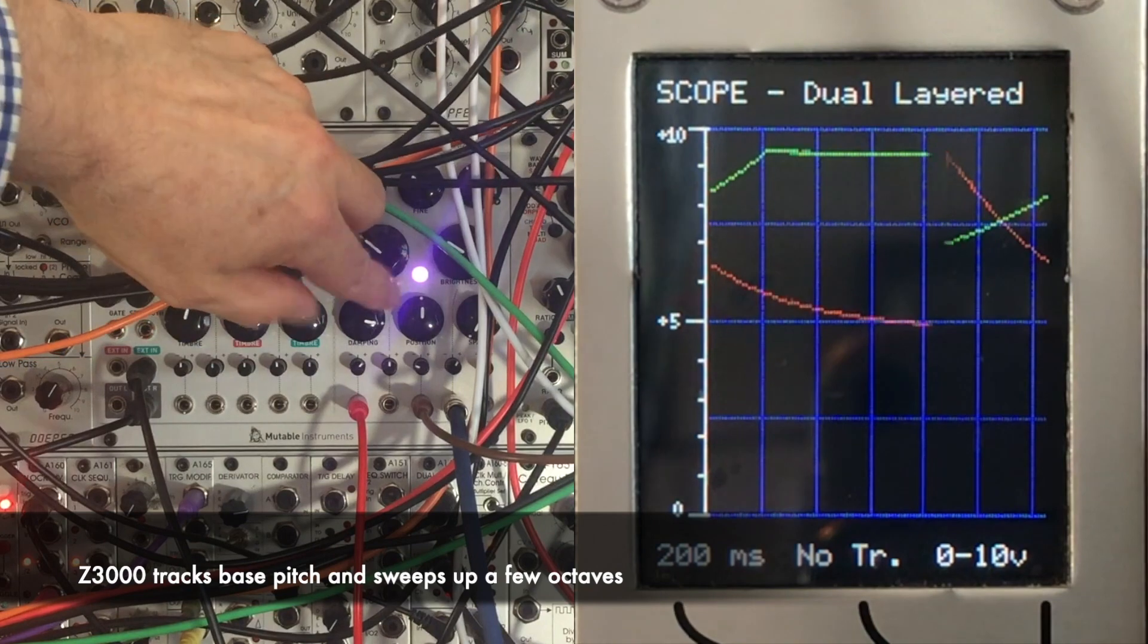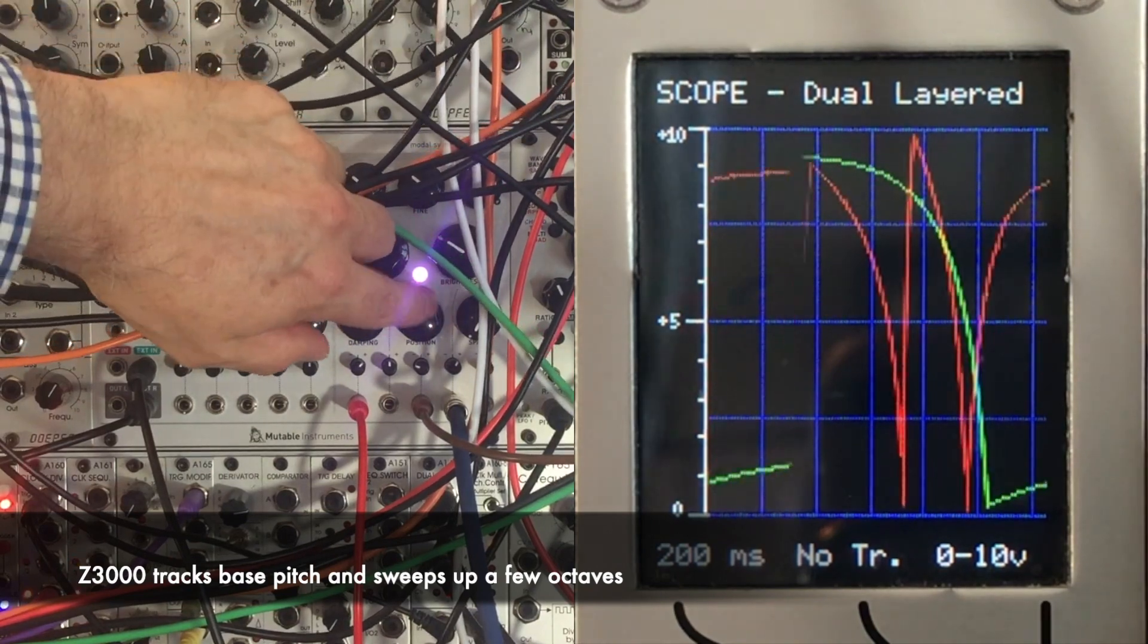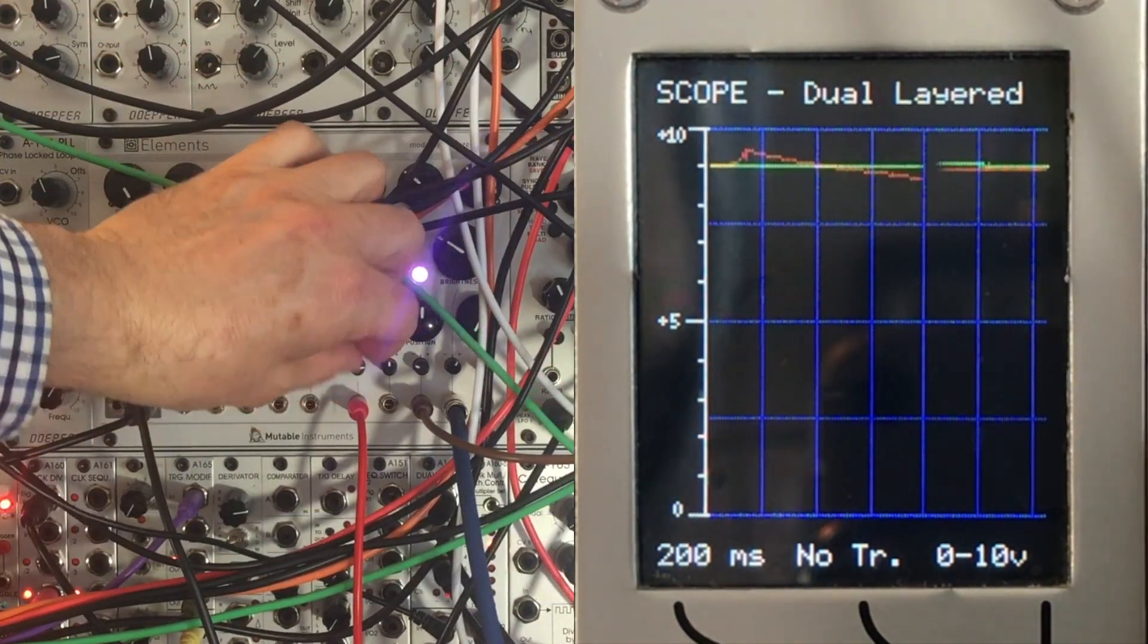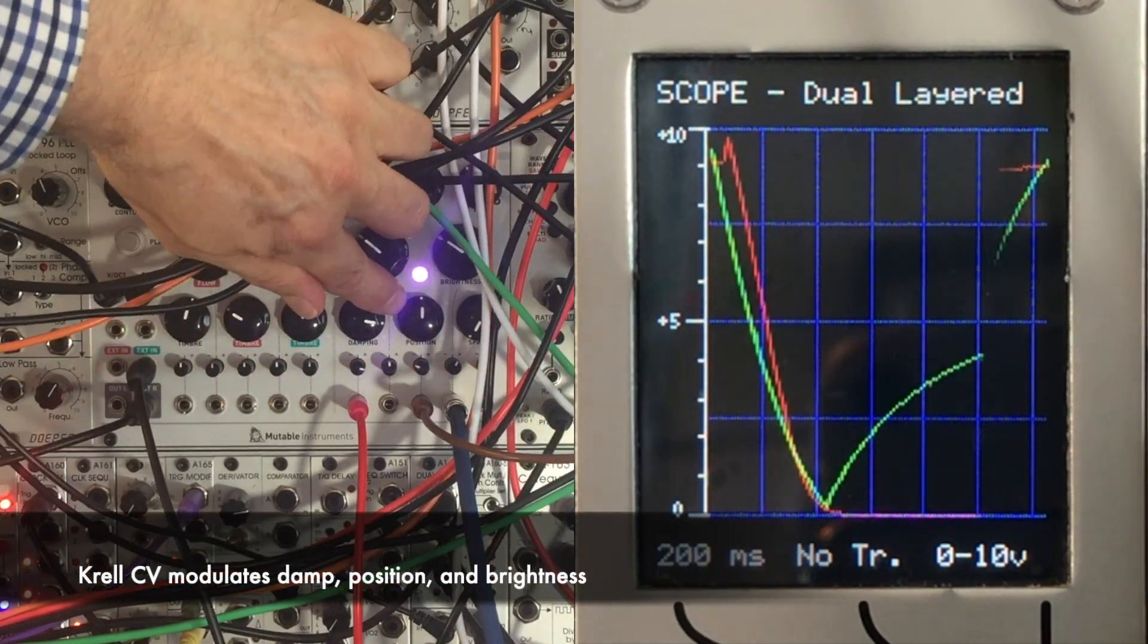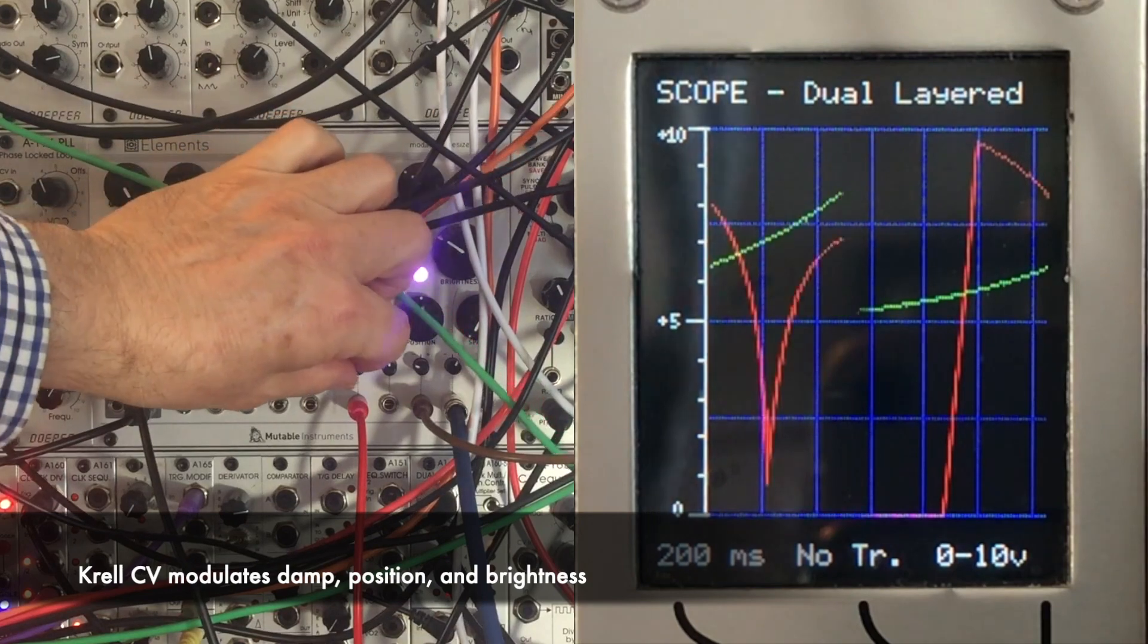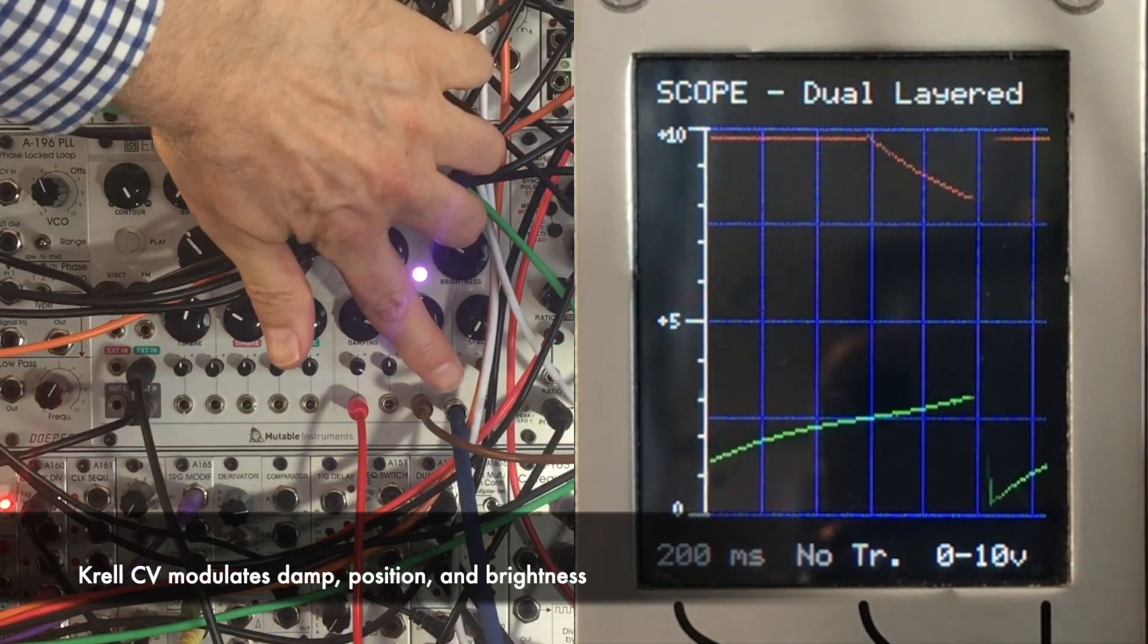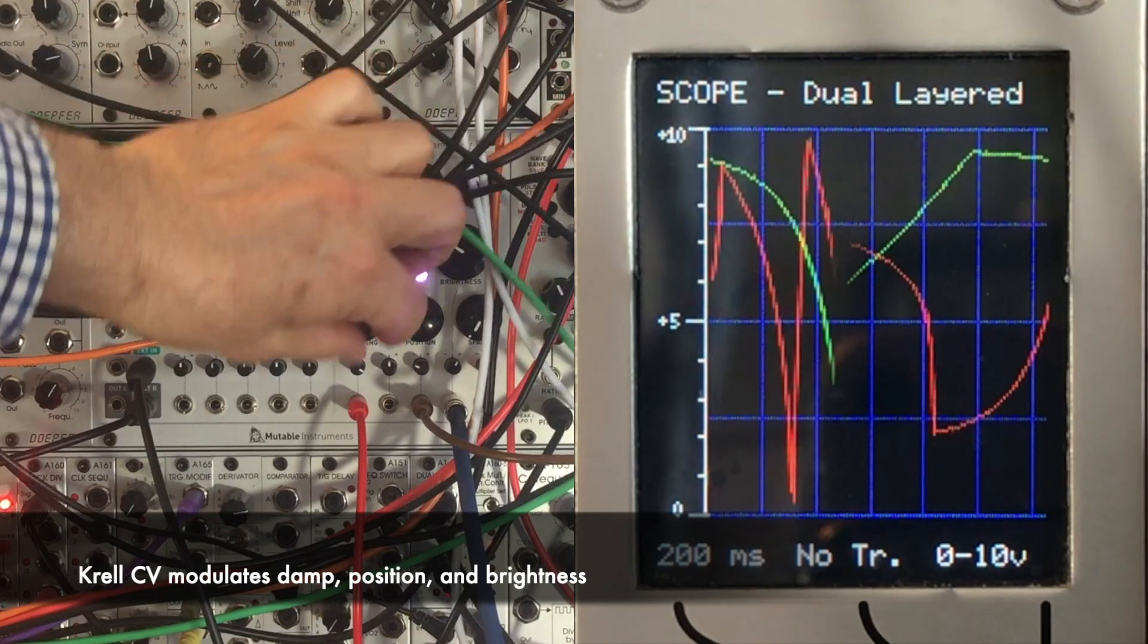And then again I've got some CV coming in on the bottom of Elements, so I'm controlling the damping, the position, and the brightness with CV. Here I'm using CV to sweep the position and here I'm using CV to open up our brightness.